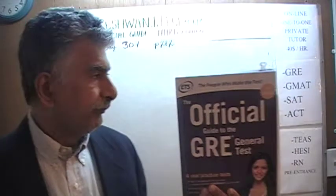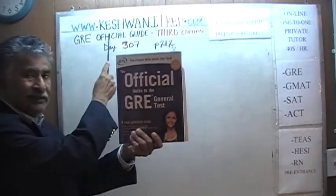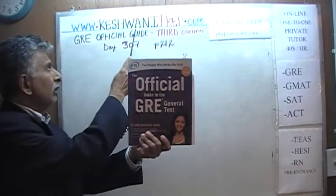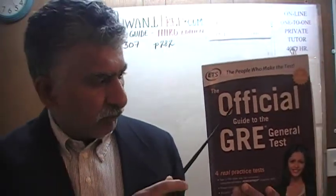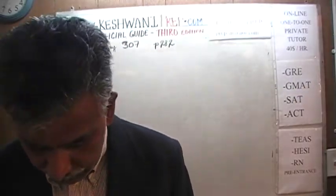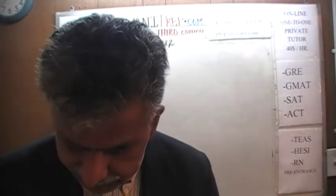Hello, my name is Keshwani — that is K-E-S-H-W-A-N-I. We are here because we want to prepare for the GRE. We have been solving math problems out of this book here, the official guide to the GRE, the third edition. If you do not own this book already, purchase one immediately. You are going to need it. Today is our lesson number 75.